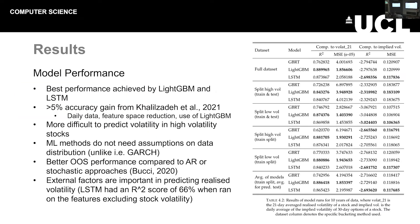In terms of actual performance, I used two different split methods — hence the many entries in the table. The best performance was achieved by LightGBM in most cases, with a best-case accuracy of 80.99%, which is an improvement of around 5% from the previous paper. This could be due to using daily data, which would naturally increase accuracy, reducing the feature space making the model more efficient, and LightGBM being a more efficient version of GBRT — it was nice to see it actually beat LSTM.